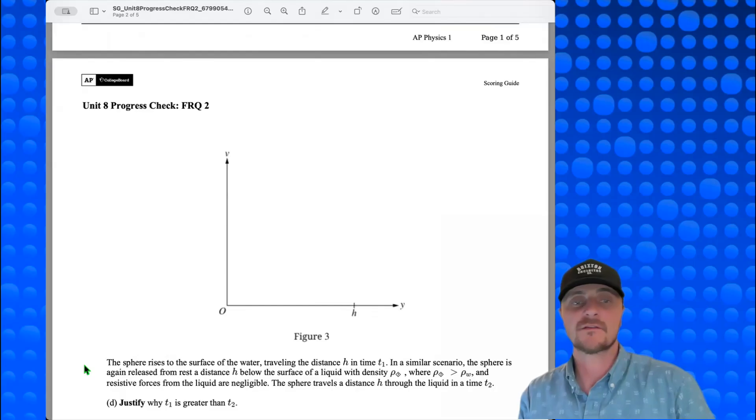Part D. A sphere rises to the surface of the water traveling the distance h in time t1. In a similar scenario, the sphere is again released from rest a distance h below the surface of a liquid with density unknown, where density unknown is greater than density water and resistive forces from the liquid are negligible. The sphere travels a distance h through the liquid in time t2. Justify why t1 is greater than t2.